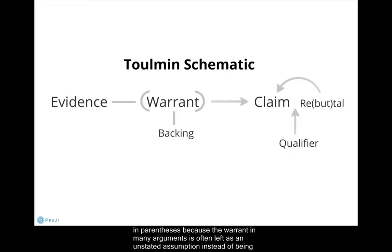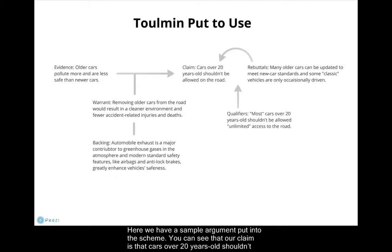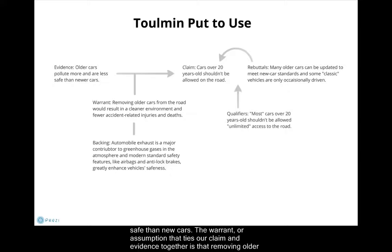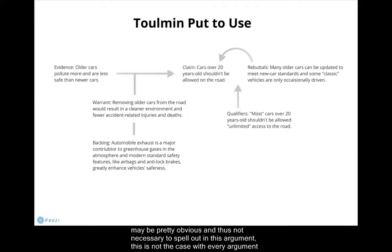Here we have a sample argument put into the scheme. You can see that our claim is that cars over 20 years old shouldn't be allowed on the road, and our evidence is that older cars pollute more and are less safe than new cars. The warrant, or assumption, that ties our claim and evidence together is that removing older cars would result in a cleaner environment and fewer accident-related injuries and deaths. While this warrant may be pretty obvious and not necessary to spell out in this argument, this is not the case for every other argument or warrant.